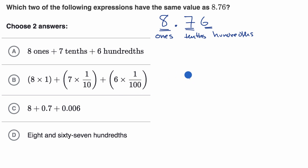And so we could view this as eight ones and seven tenths and six hundredths, or eight ones plus seven tenths plus six hundredths. Well, that's exactly what they wrote right over here. Eight ones, seven tenths, and six hundredths. So I would choose that one for sure.